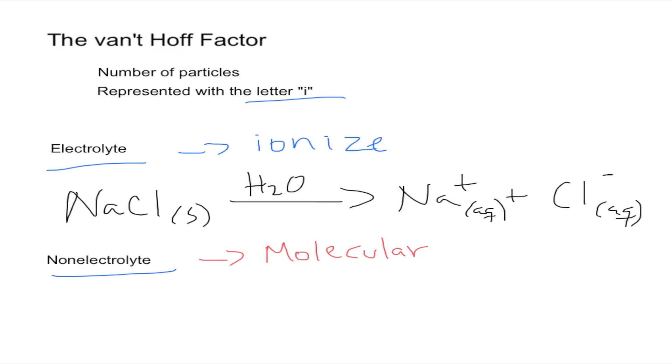So the question you want to ask yourself is how many particles were produced out of this reaction. And you can see two different things. You can see the sodium and the chlorine. So that means that our i, our van't Hoff factor, is going to be two. So to complement our definition a little better, is the number of particles produced.